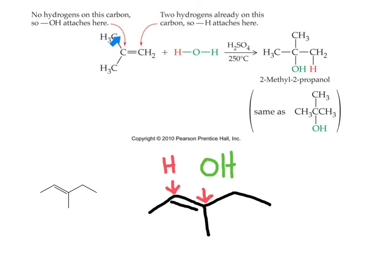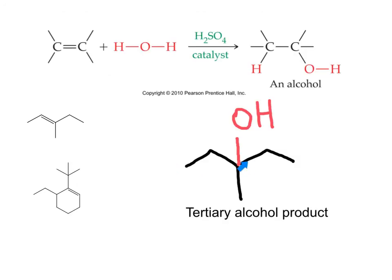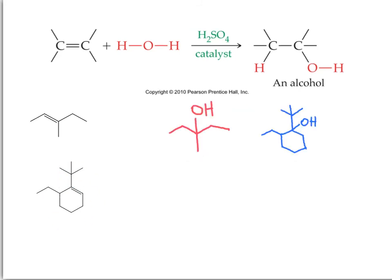Observe that this is a di-substituted alkene, but this carbon has two hydrogens — it is not the same type of di-substituted alkene as before. The second example is a tri-substituted alkene, and the OH will add to the carbon that has no hydrogens, and the hydrogen to the carbon that has one hydrogen. The final product of addition of water in the presence of sulfuric acid catalyst is a tertiary alcohol — tertiary because attached to the carbon bearing the OH, we have three carbons. There is no difference for the cycloalkene: it is also a tri-substituted alkene and we also obtain a tertiary alcohol, but now it is a cyclic one.